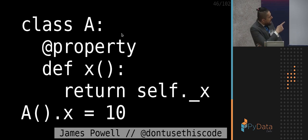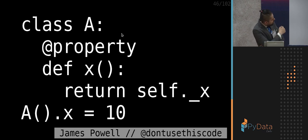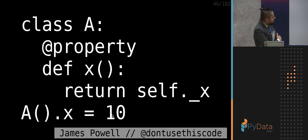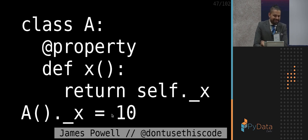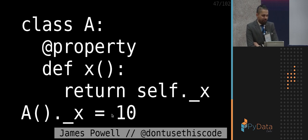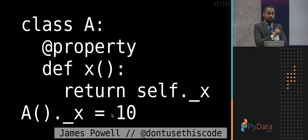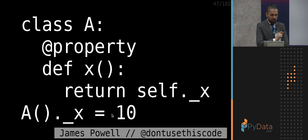As a library author, you might think: I'll use a property to hide that underscore method behind it. Somebody tries to do `.x` and they won't be able to set it — with only a getter and no setter, it will fail. But somebody's just going to do a `dir` on that object, find the underscore attribute, and change the code to access it directly. There's not much you can do — they're going to pierce that veil immediately.